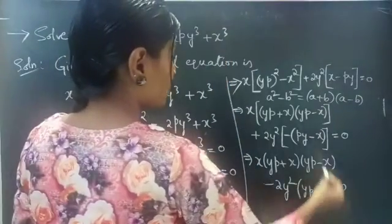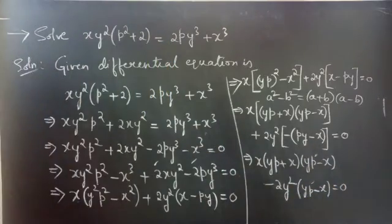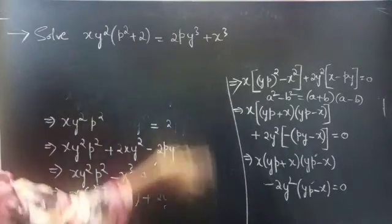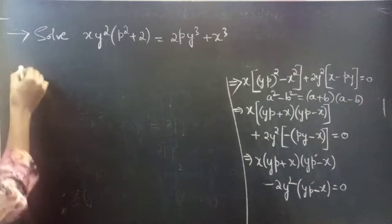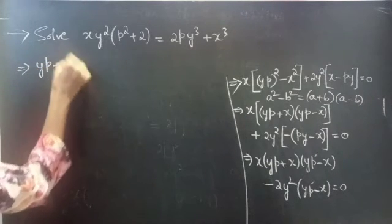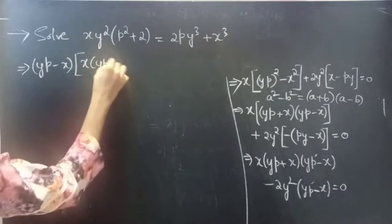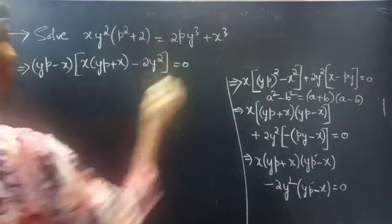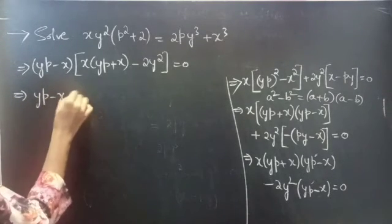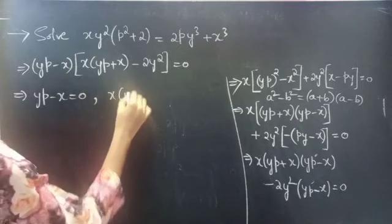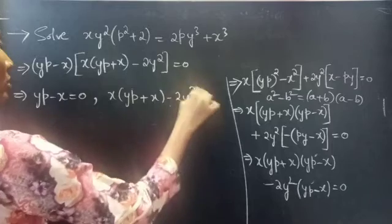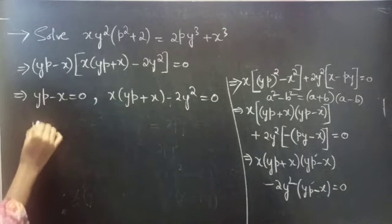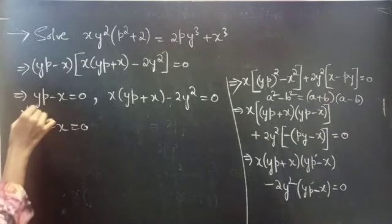You can see that (yp - x) is common in both terms. Taking (yp - x) as a common factor gives (yp - x)[x(yp + x) - 2y²] = 0. So either yp - x = 0 or x(yp + x) - 2y² = 0.